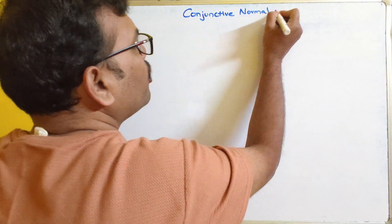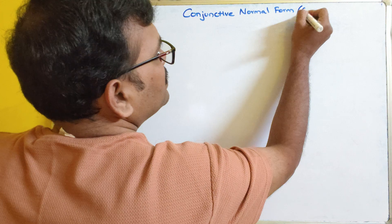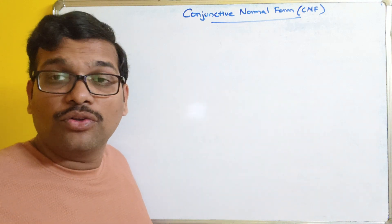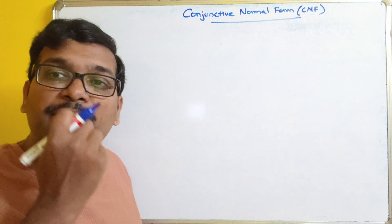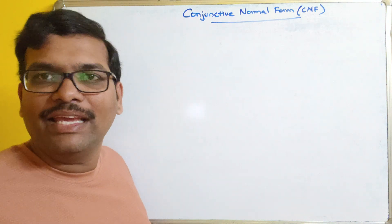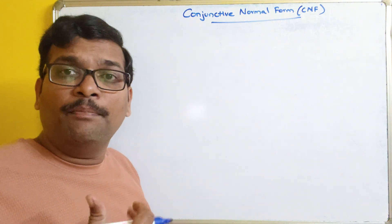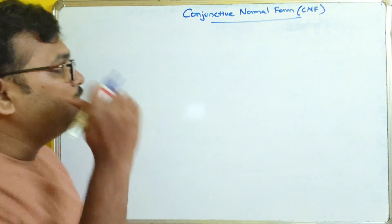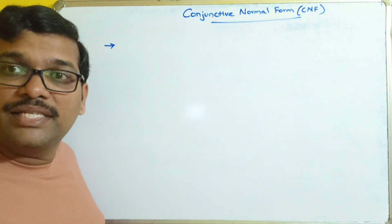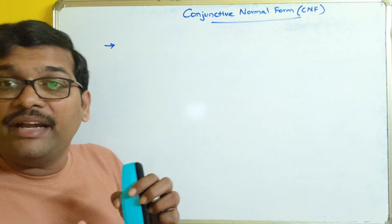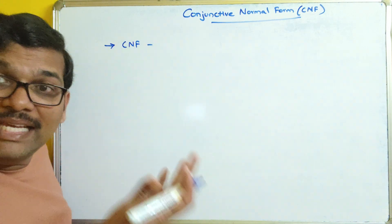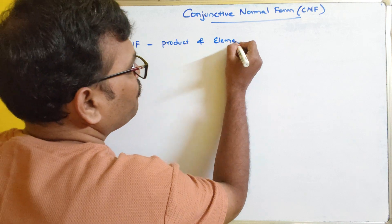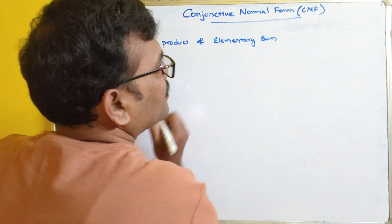Conjunctive normal form — usually we will be calling this as CNF. Our goal is to convert the given formula into CNF. The main purpose of using this normal form is to simplify the formula in order to find the logical equivalence. Now, directly we go to how we can convert any formula into CNF. CNF is a product of elementary sums. If the formula is in the form of a product of elementary sums, then we can call it a CNF.